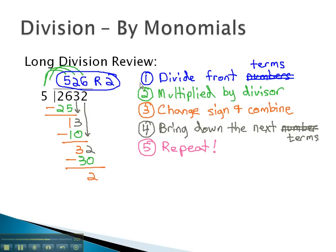When we do that, we see our process is going to be to divide the front terms, multiply this by the divisor, change the sign and combine, bring down the next terms, and repeat the process.